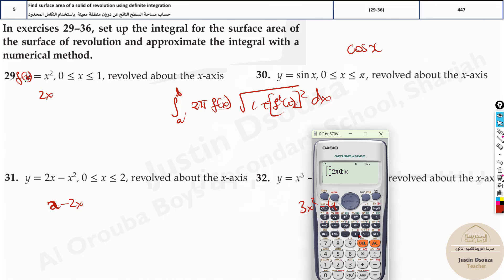Let's start with the first problem. It's simple: x² close the bracket, multiply it with square root of 1 plus your derived function squared, which is 2x.